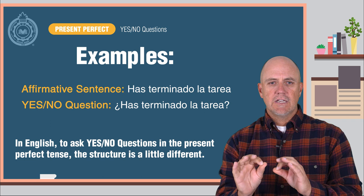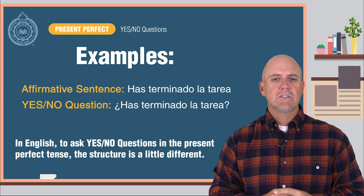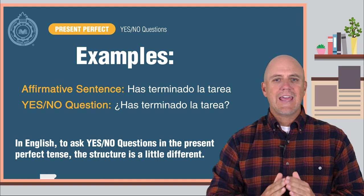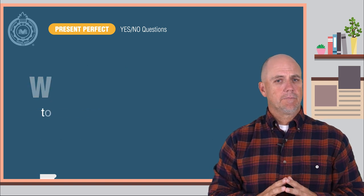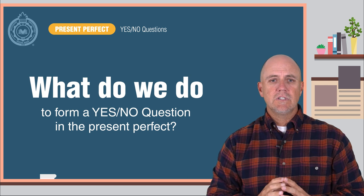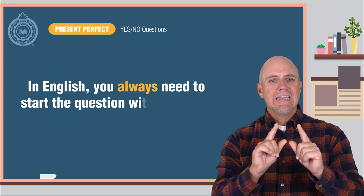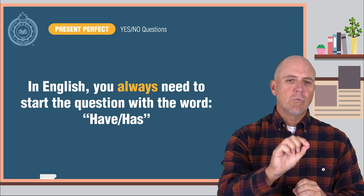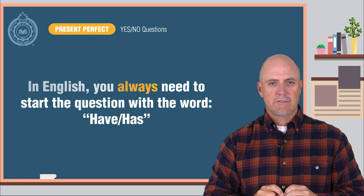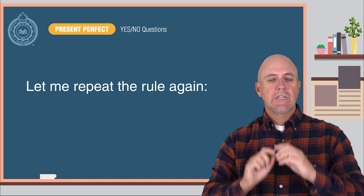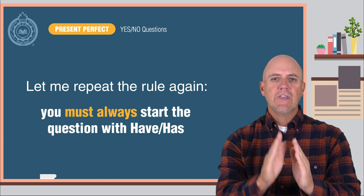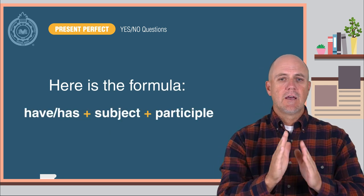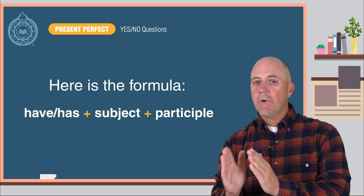In English, to ask yes-no questions in the present perfect tense, the structure is a little different than in the affirmative and negative sentences. You always need to start the question with the word 'have' or 'has.' You must always start the question with 'have' or 'has.' Here is the formula: have or has, plus the subject, plus the participle.